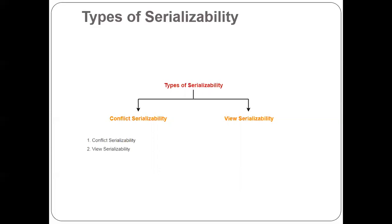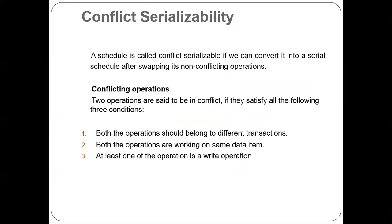There are two types of serializability: Conflict Serializability and View Serializability. In this video, we discuss Conflict Serializability. A schedule is called conflict serializable if we can convert it into a serial schedule by swapping non-conflicting operations.